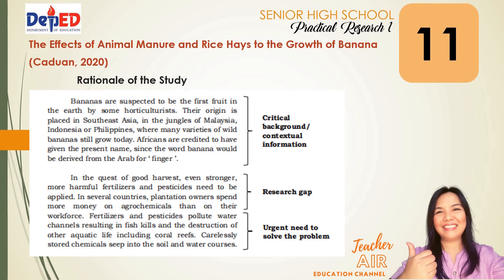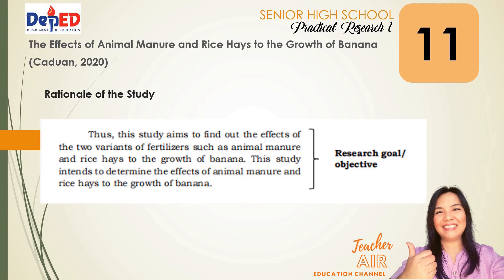The next paragraph shows the research gap. In the quest for good harvests, even stronger, more harmful fertilizers and pesticides need to be applied. In several countries, plantation owners spend more money on agrochemicals than on their workforce. The last part of this paragraph shows the urgent need to solve the problem: fertilizers and pesticides pollute water channels, resulting in fish kills and the destruction of other aquatic life, including coral reefs, and carelessly stored chemicals seep into the soil and water courses. Here is the research goal and objective, also part of the rationale. Thus, this study aims to find out the effects of two variants of fertilizers — animal manure and rice hays — on the growth of banana. This study intends to determine the effects of animal manure and rice hays on the growth of banana.